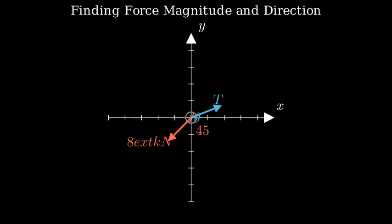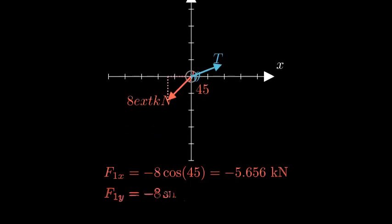Let's analyze the components of our forces. For the 8 kN force, we can break it into x and y components using cosine and sine of 45 degrees. This gives us negative 5.656 kN in both the x and y directions.